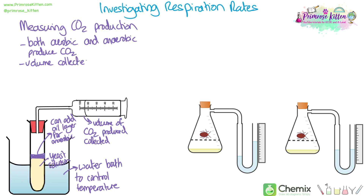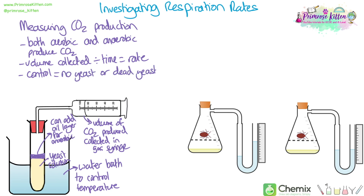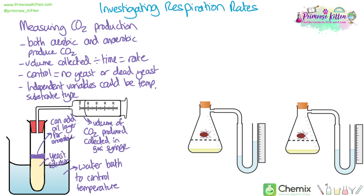This method allows you to analyse both aerobic and anaerobic respiration because they both produce carbon dioxide. You can calculate the volume collected divided by the time to get the rate of reaction. You should set up a control experiment with no yeast or with dead yeast, which you can achieve by boiling some yeast. Independent variables could include temperature, substrate type, or substrate concentration in the yeast solution.